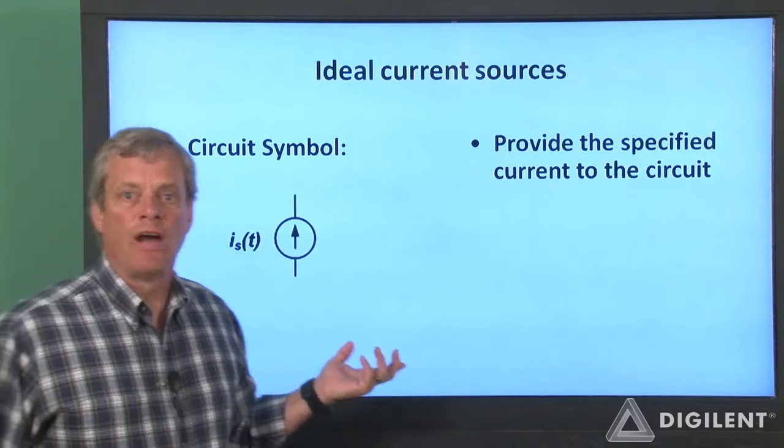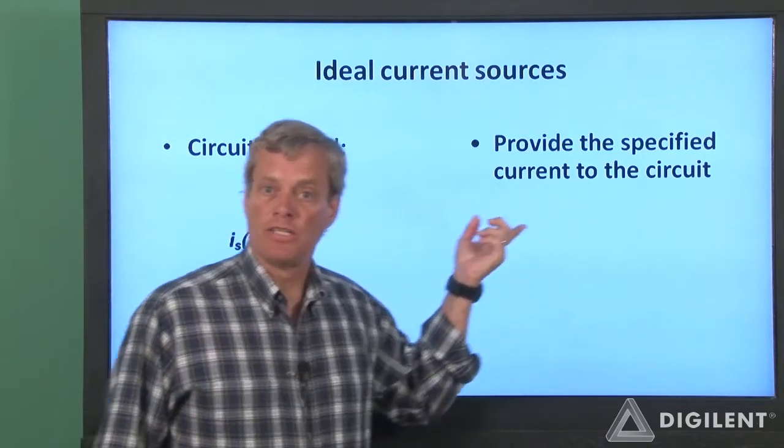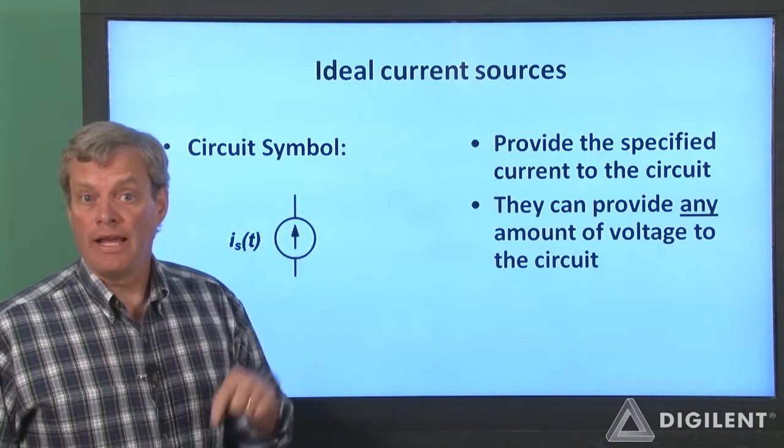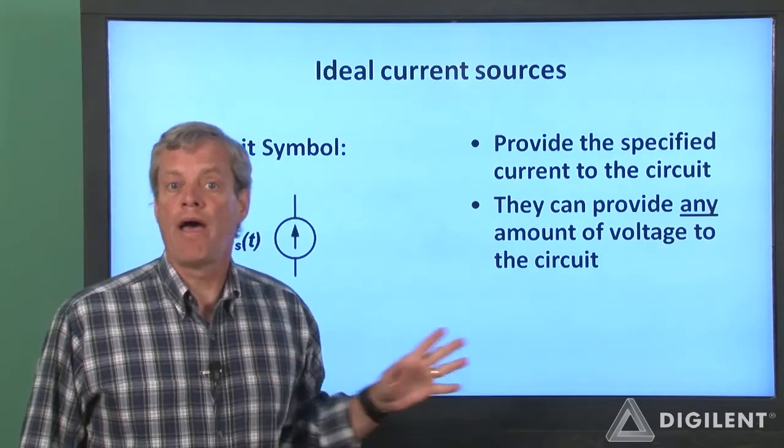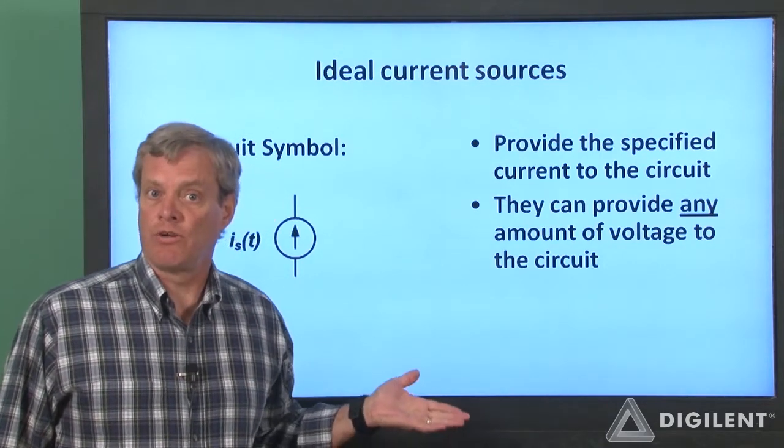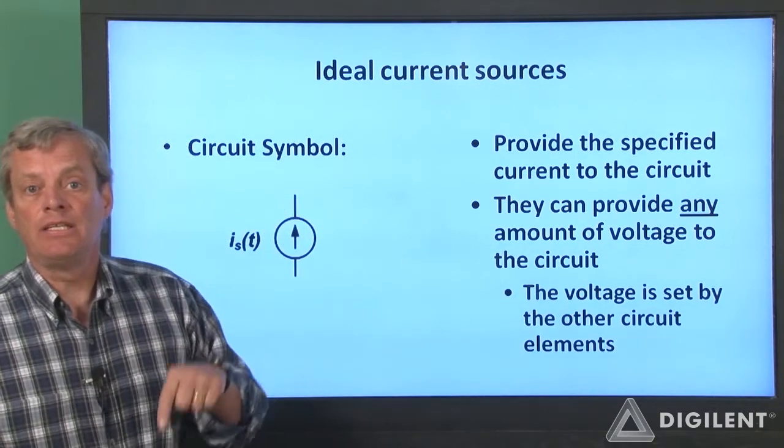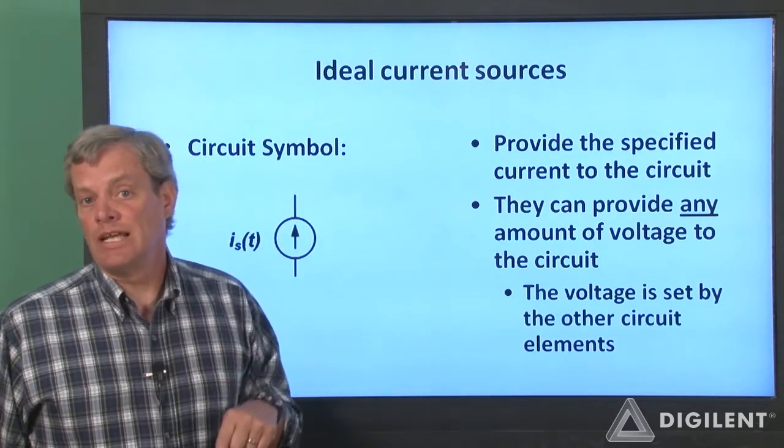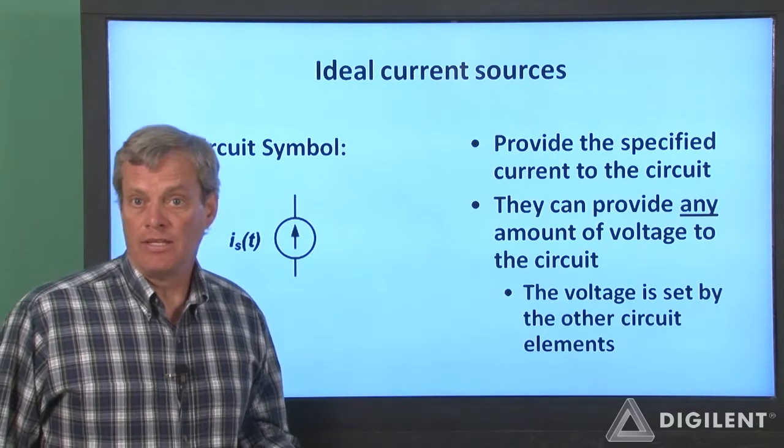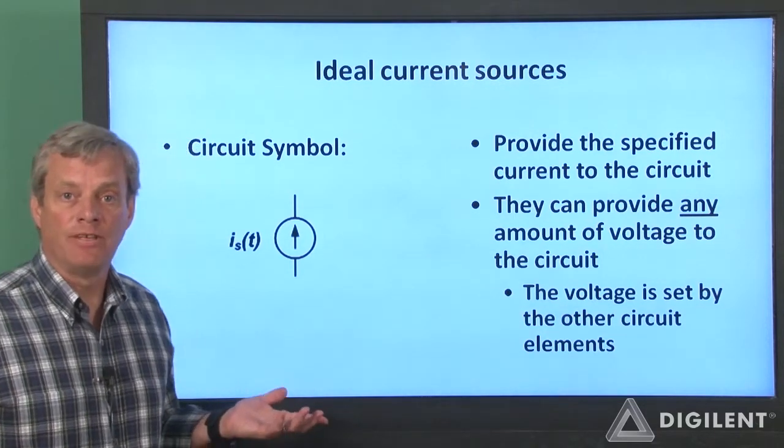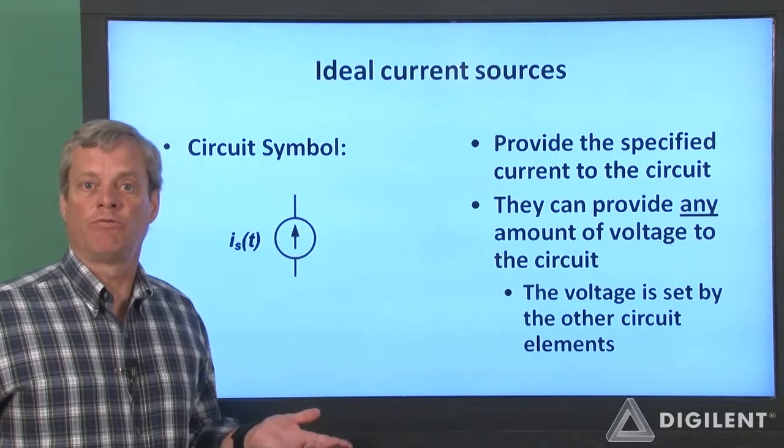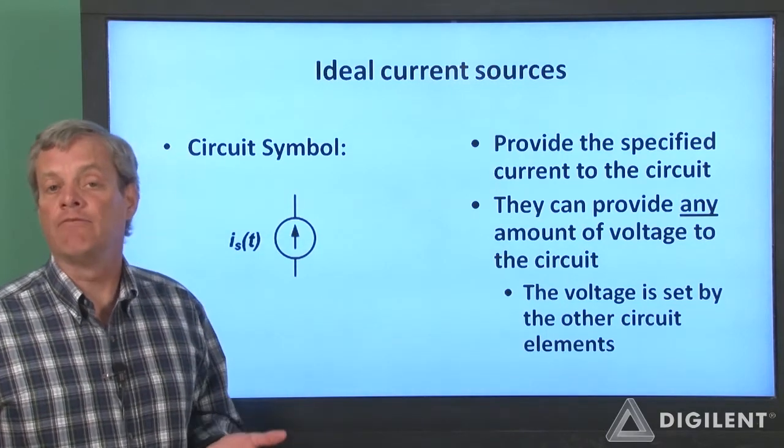Ideal current sources provide the specified current regardless of anything else. For an ideal source, this is true no matter what the voltage difference is across the source. The voltage difference across an ideal current source is completely determined by the circuit the source is connected to. As with ideal voltage sources, a side effect of this is that it's theoretically possible for an ideal current source to provide infinite power.